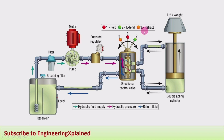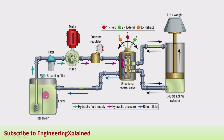The third position is retract: the piston retracts, fluid flows from the direction control valve in this direction, pressure builds, and the piston moves downward. The fluid at the bottom level passes through the direction control valve back to the reservoir.